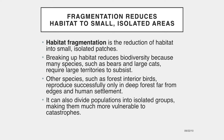Fragmentation also divides populations into isolated groups, making them much more vulnerable to catastrophic events such as storms or diseases. A very small population may not have enough breeding adults to be viable even under normal circumstances. An important question in conservation biology is what is the minimum viable population size for a species, and when dwindling populations have grown too small to survive.